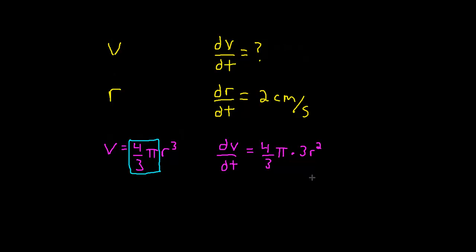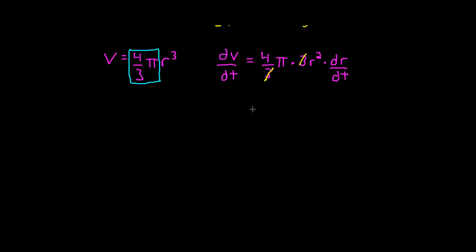Now that's the derivative with respect to r, but we have to use the chain rule here. And the chain rule says you take the derivative with respect to r multiplied by the derivative with respect to t. Now it looks like we can do some simplifying here before we substitute. This 3 reduces with this 3 right here. And we'll go ahead and rewrite this so it's a little cleaner as 4πr² times dr/dt.